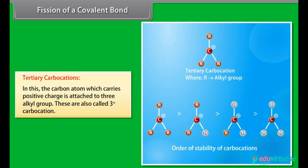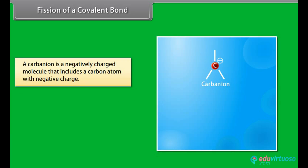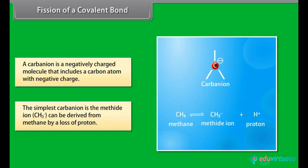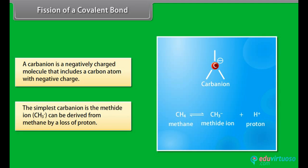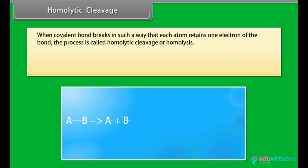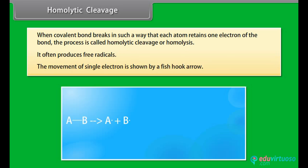The order of stability of carbocations is tertiary > secondary > primary. A carbanion is a negatively charged molecule that includes a carbon atom with a negative charge. The simplest carbanion is the methide ion, derived from methane by loss of a proton. In homolytic cleavage, a covalent bond breaks such that each atom retains one electron of the bond — this process produces free radicals. The movement of a single electron is shown by a fishhook arrow.